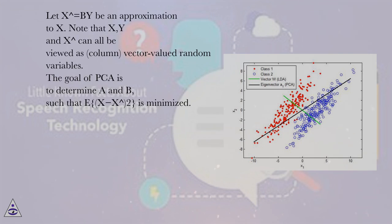Let X̂ = BY be an approximation to X. Note that X, Y, and X̂ can all be viewed as column vector-valued random variables. The goal of PCA is to determine A and B such that E{(X - X̂)²} is minimized.